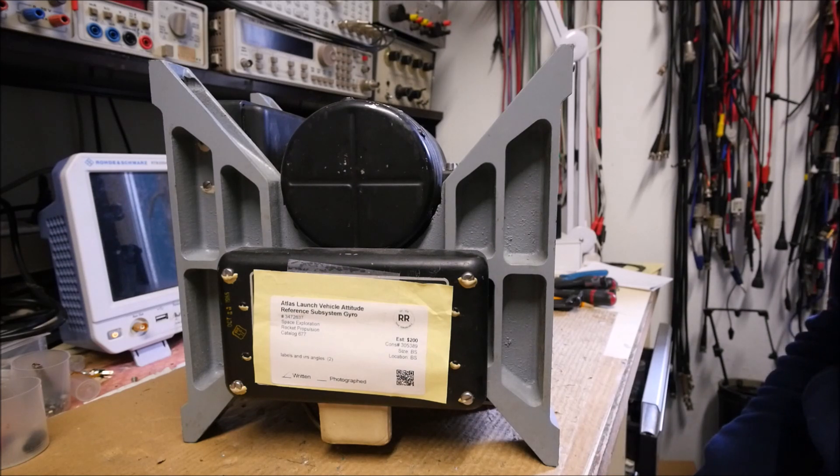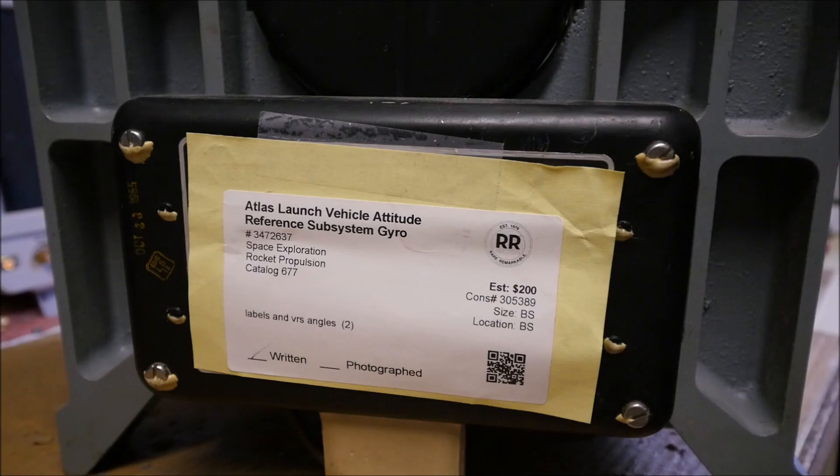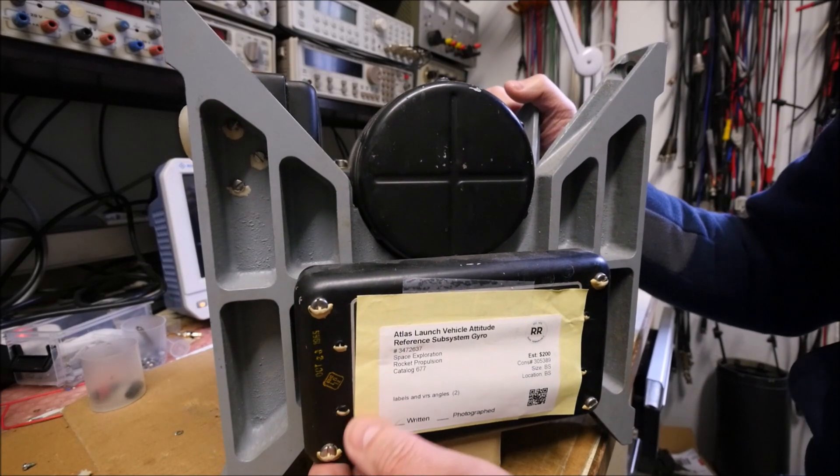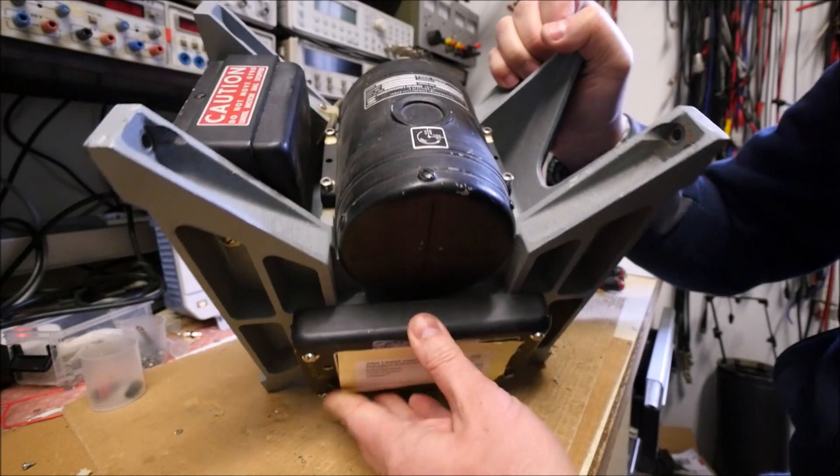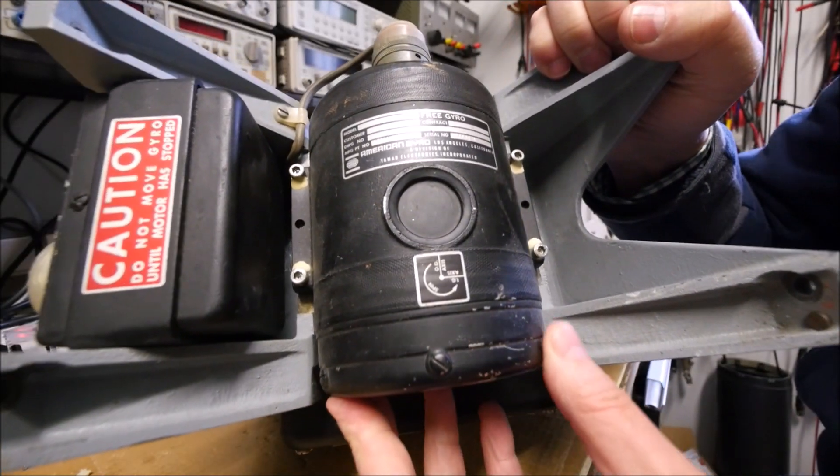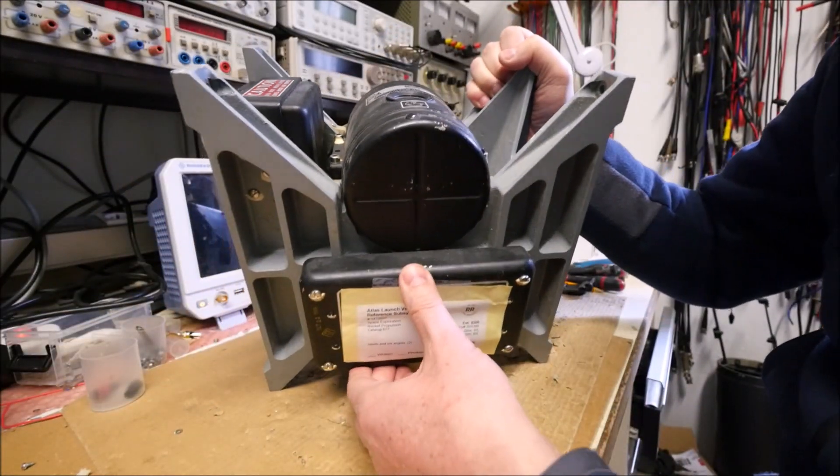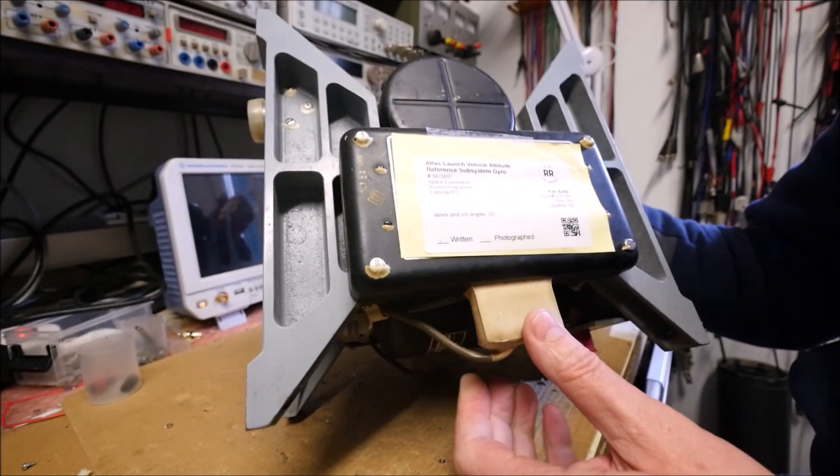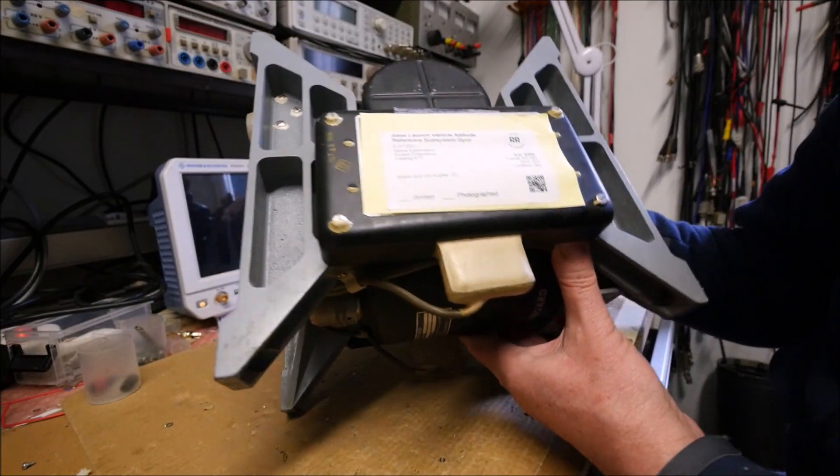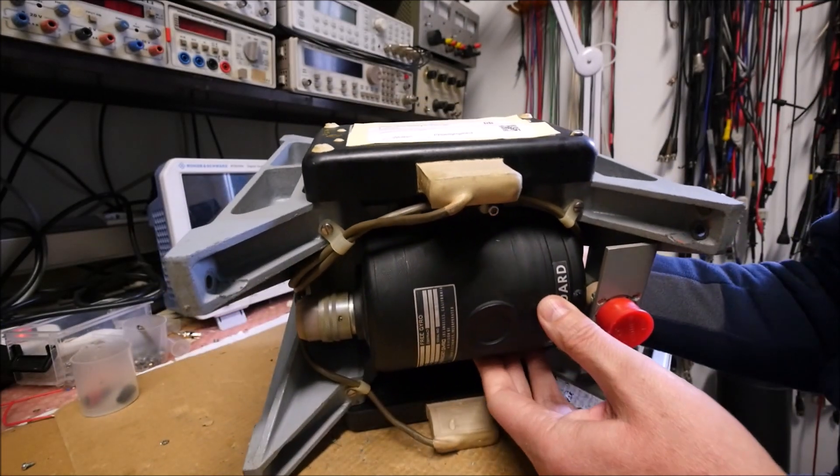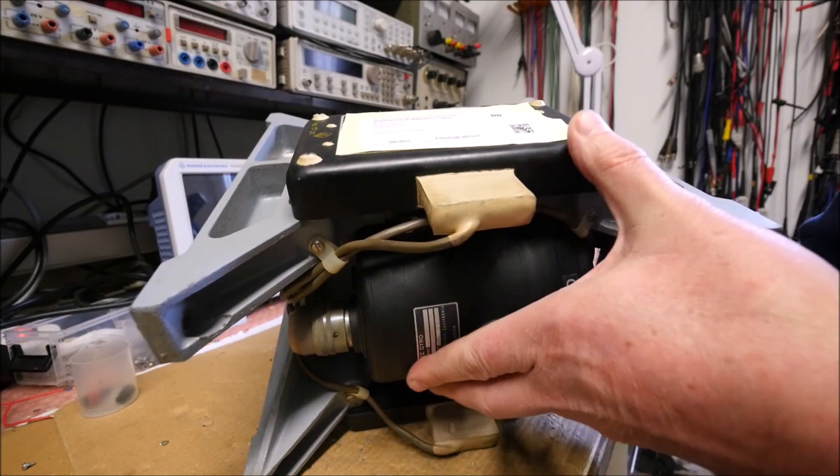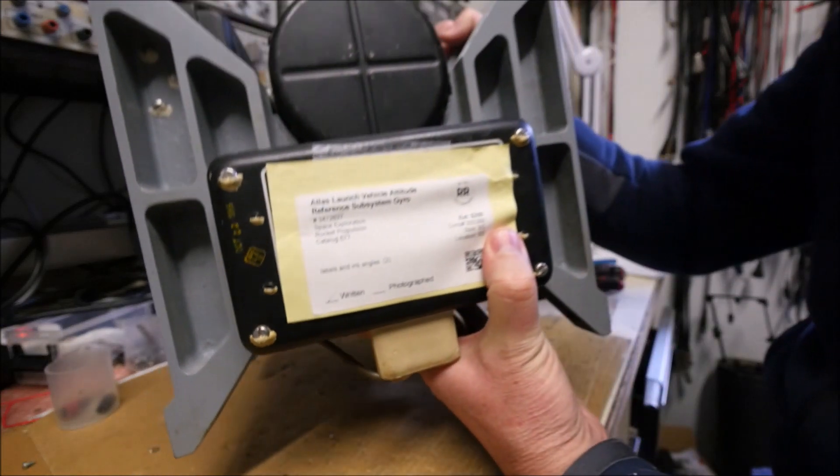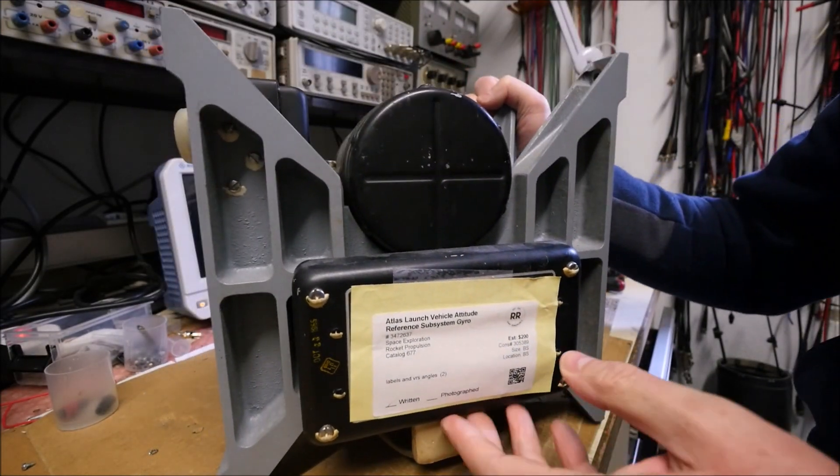This stuff is a gyro reference unit which was designed for an ATLAS launcher. You can see here the label from RR Auctions. There are two identical gyros. We can see one here on the top. There is another one on the bottom side which is orthogonally placed. It is exactly the same here. And there are also two modules.